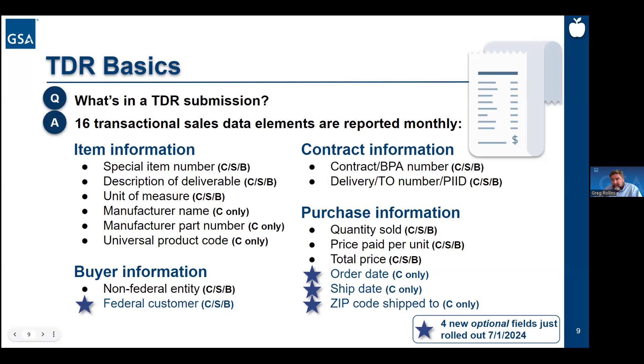We collect purchase information you'd normally include on that receipt: the quantity sold, the unit price, the total price, and then three optional fields that apply only to products — order date, ship date, and zip code ship-to. The four optional fields that we just rolled out in July are marked with stars on the slide. On the next slide, I'll show you the same information framed up a different way.